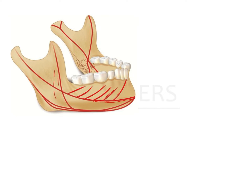This common pillar of force runs from one condyle to the other. The thick cortical compact bone at the angle and lower border of the mandible offers great resistance to forces. Two trajectory lines run above and below the inferior alveolar nerve canal, actually protecting the nerve from damage.